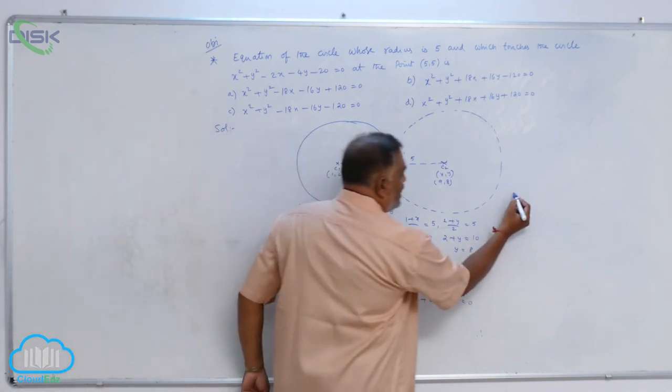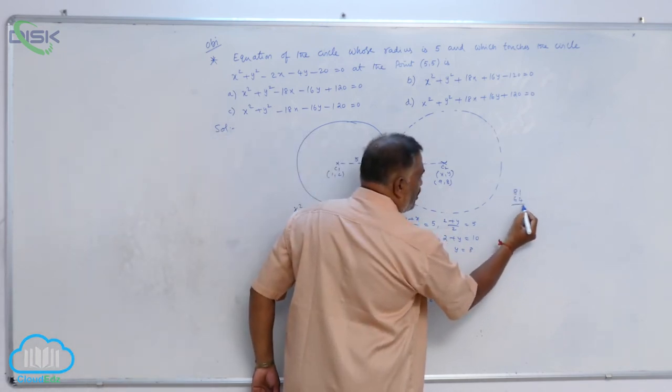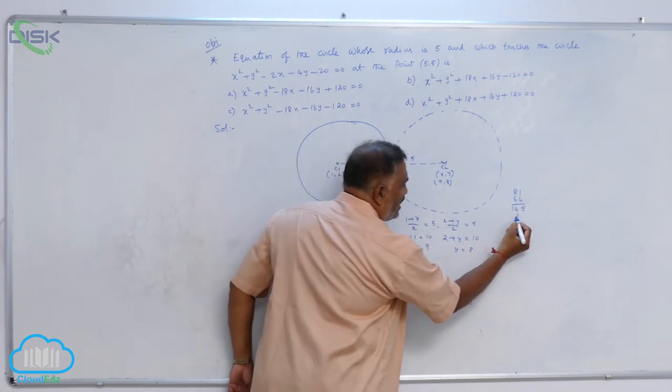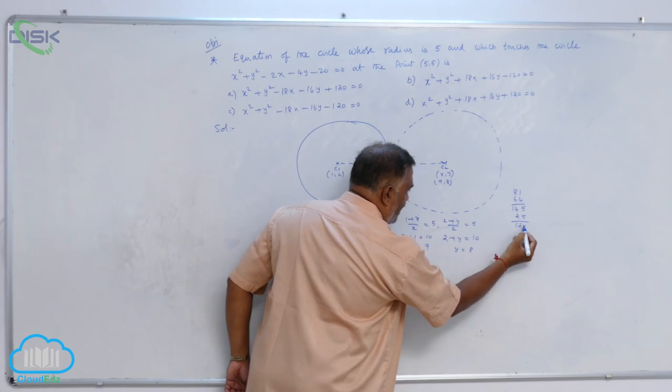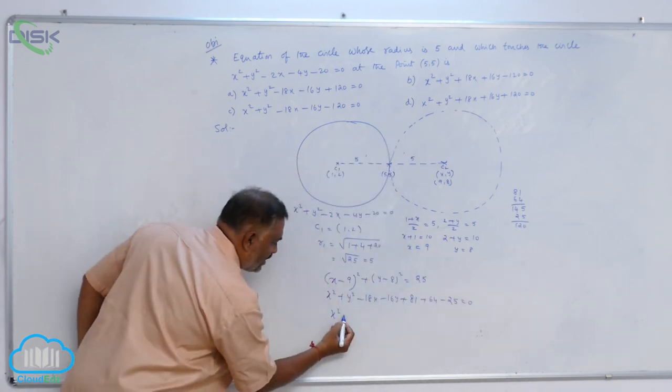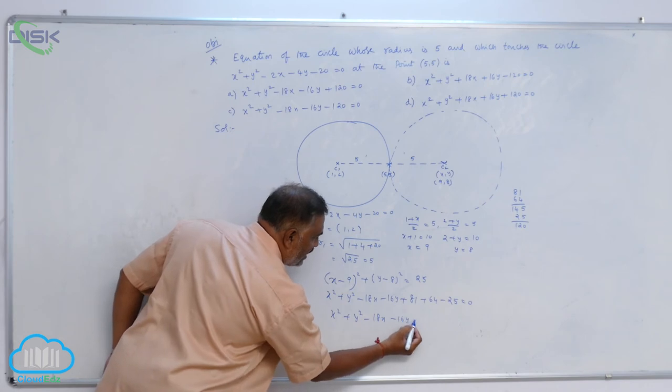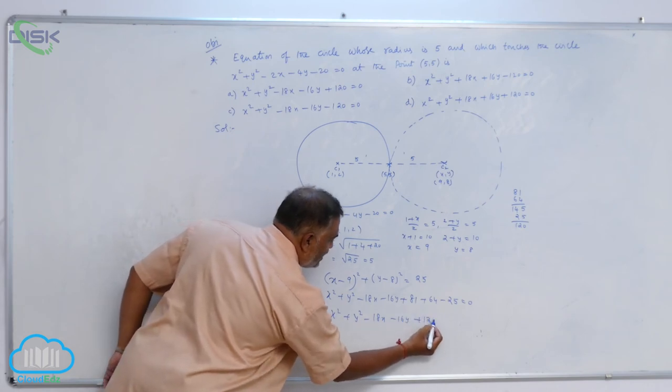Now, you can check: 81 + 64 will give you, I think it is 145. Minus 25 means it is 120.